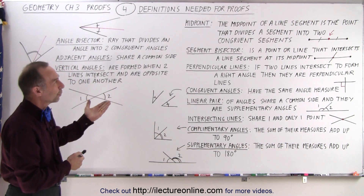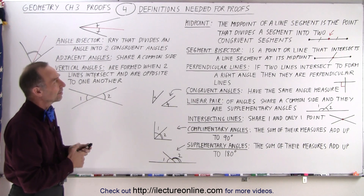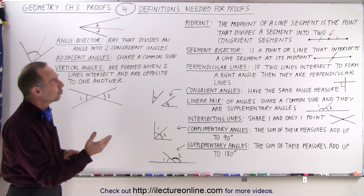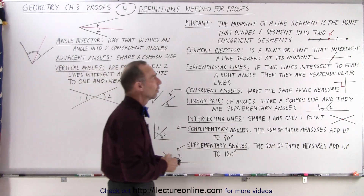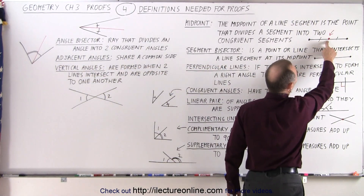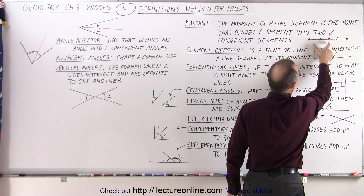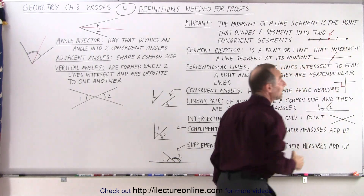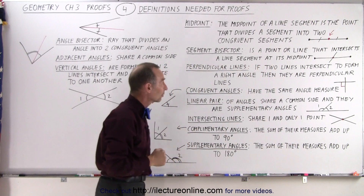The midpoint of a line segment is the point that divides a segment into two congruent segments. Here we have a line segment, there's the midpoint, and on either side of the midpoint these line segments are congruent, meaning they have the same length.